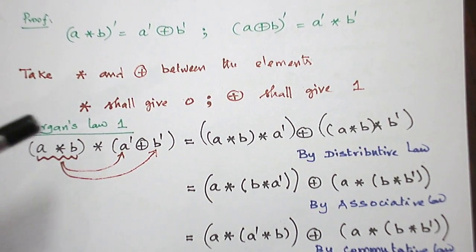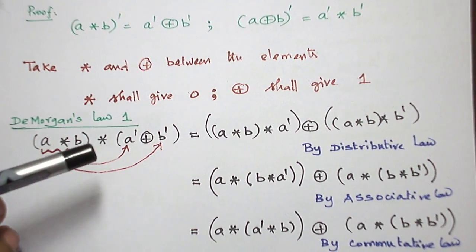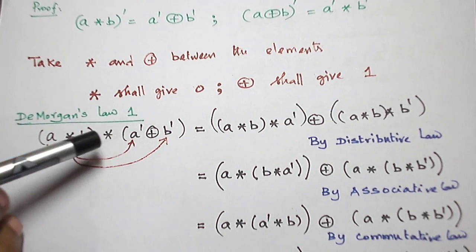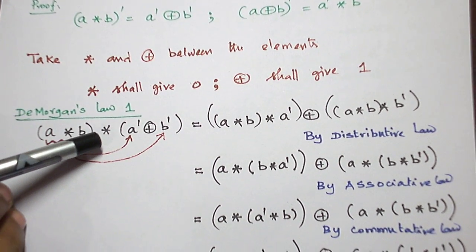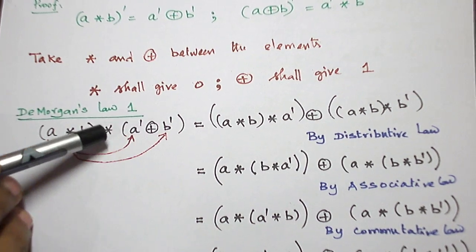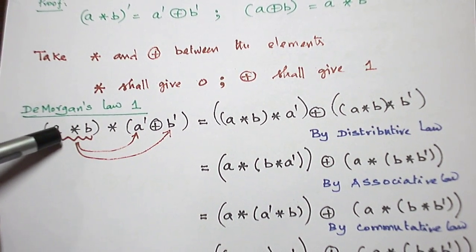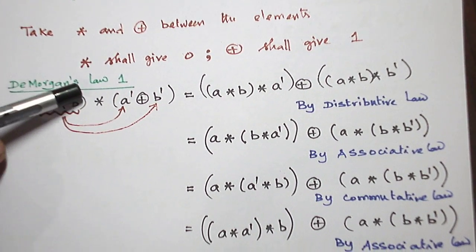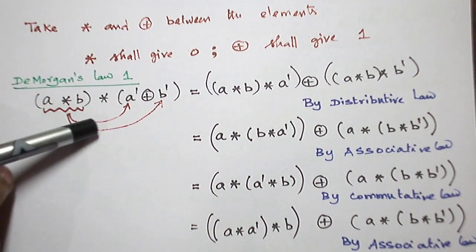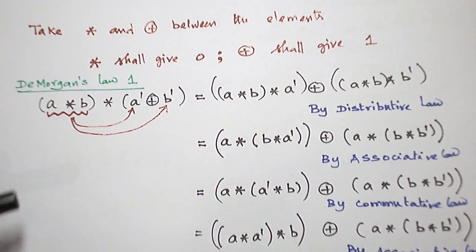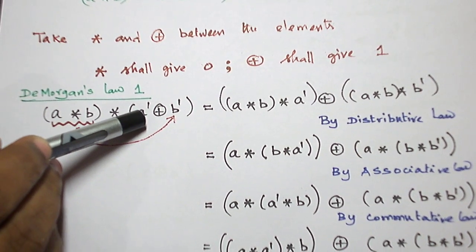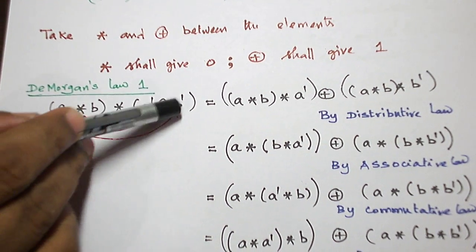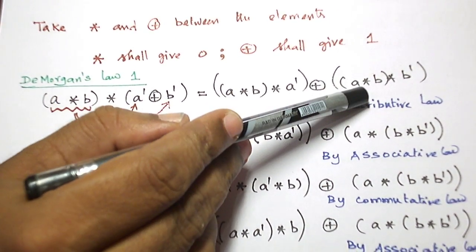I am going to apply distributive law. When applying distributive law, inside the bracket we have one operation and outside the bracket another operation — these two are different, but the inner operations are the same. So we cannot apply distributive law directly to this element; the entire element A star B is going to be considered as a single element, and multiplied with A dash and B dash separately. So: (A star B) star A dash plus (A star B) star B dash.